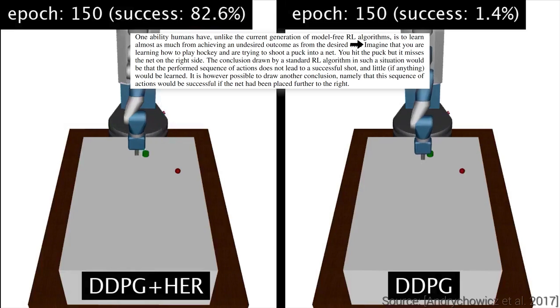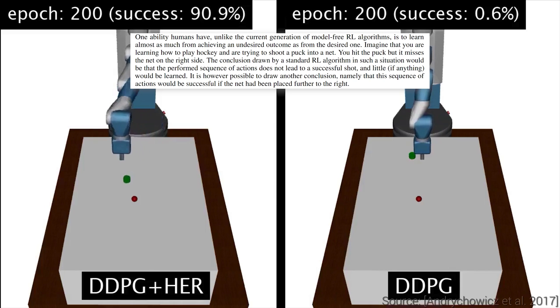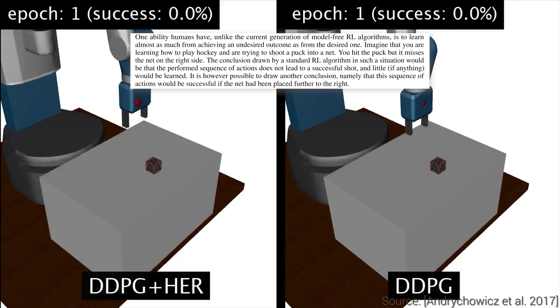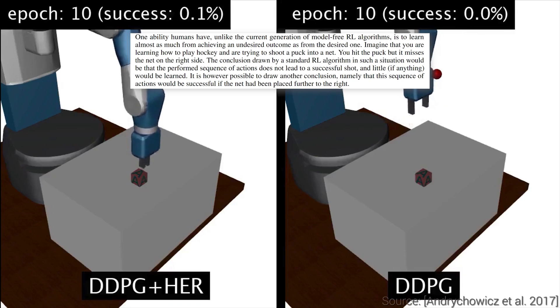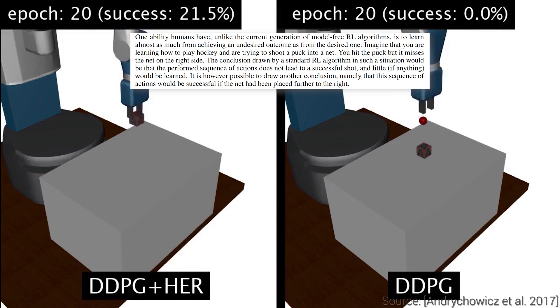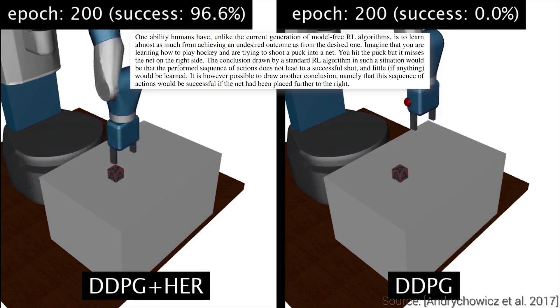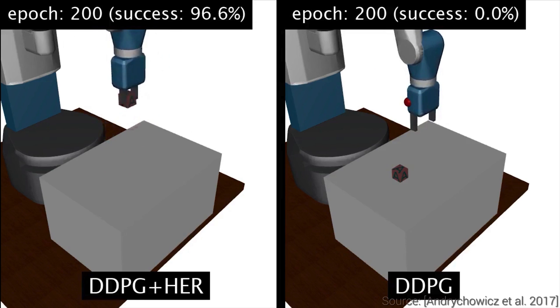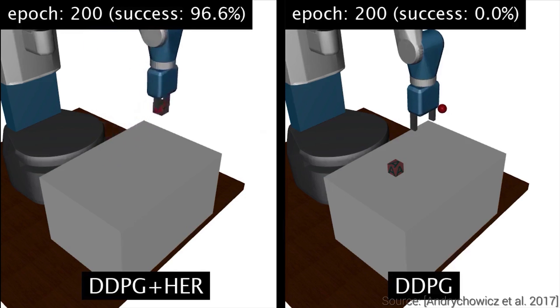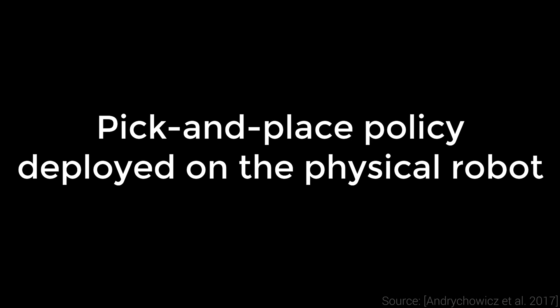Let me quote the authors. Imagine that you are learning how to play hockey and are trying to shoot a puck into a net. You hit the puck, but it misses the net on the right side. The conclusion drawn by a standard reinforcement learning algorithm in such a situation would be that the performed sequence of actions does not lead to a successful shot and little, if anything, would be learned. It is however possible to draw another conclusion, namely that this sequence of actions would be successful if the net had been placed further to the right. They have achieved this by storing and replaying previous experiences with different potential goals.